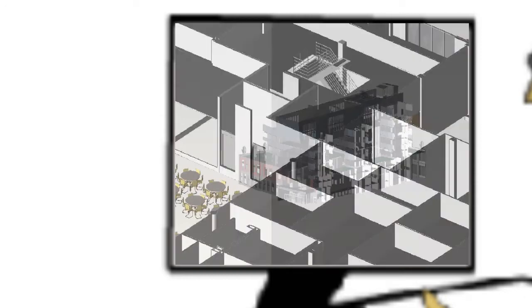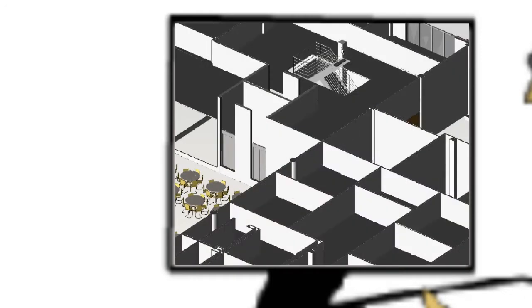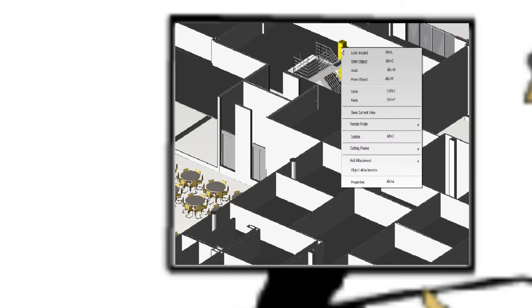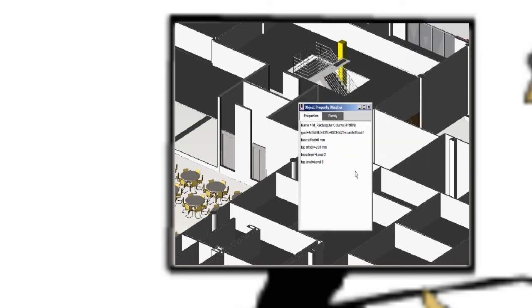You can also select components in any of the model views, and then view the properties for those components. Here, Jeff selects the rectangular column next to the staircase to view its properties.